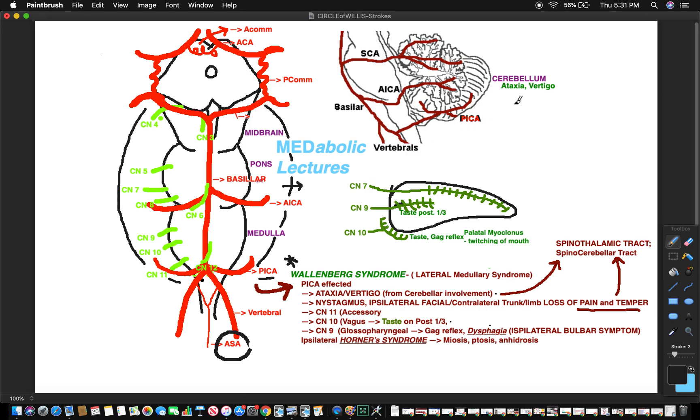Just imagine that this is the little cauliflower structure that we're talking about. When we talk about the cerebellum and this artery supplies it along with many other structures, you're gonna get symptoms from infarction of the cerebellum. That's why you have ataxia and vertigo.